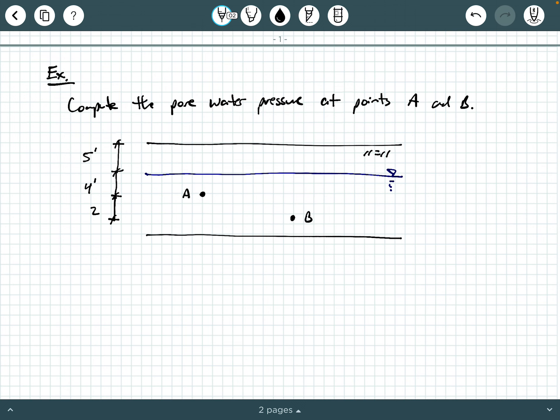So let's take a look at what we have here. We want to find the pore water pressure at these two points, point A and point B. Now, first, you have to ask yourself, does this top 5 feet come into play in this example? Well, the answer is no.